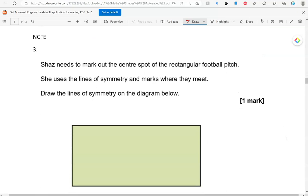Chas needs to mark out the center spot of the rectangular football pitch. She uses the line of symmetry and marks where they meet. Draw the lines of symmetry on the diagram below. So, rectangle has two lines of symmetry. And this is where they meet.